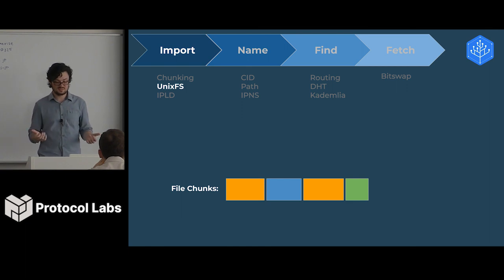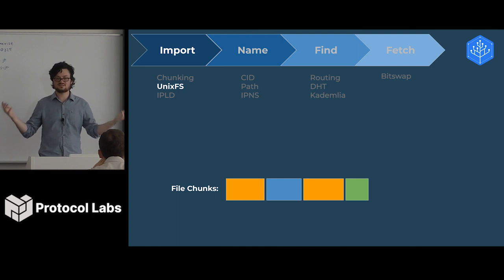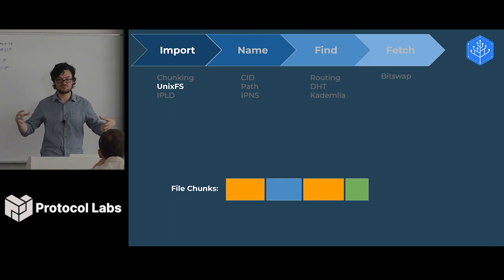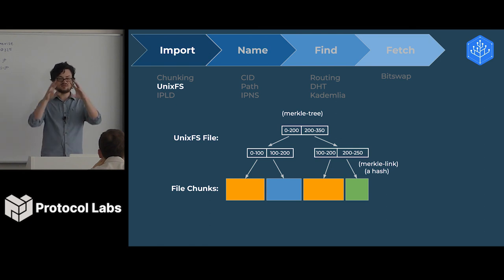UnixFS. So now we have a file that's been chunked into little pieces, but that doesn't really give us a file system. The first thing we need to do is create an actual contiguous file out of these pieces. For that, we create something called a UnixFS file. It's actually a Merkle tree where you have nodes that basically say, like, bytes 0 through some range are on this side.